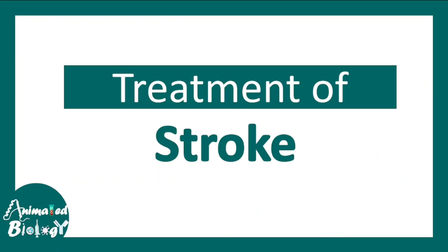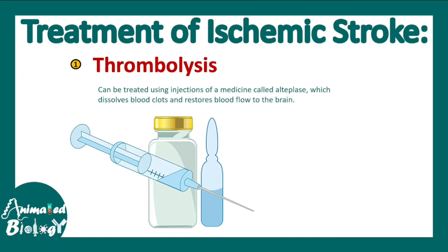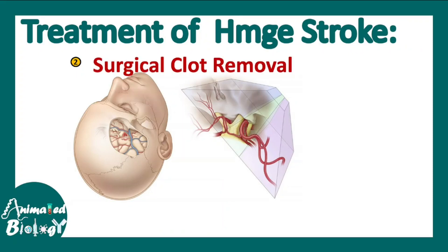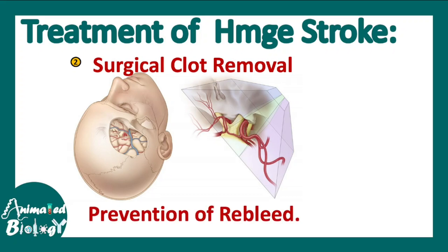Once diagnosed, ischemic stroke is treated by thrombolysis — injecting drugs to dissolve blood clots and restore blood flow to the brain. Hemorrhagic strokes are managed by craniotomy and surgical removal of the clot, and prevention of re-bleed by controlling and maintaining blood pressure.